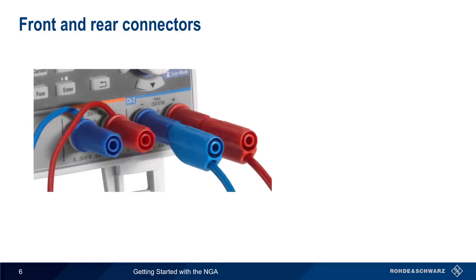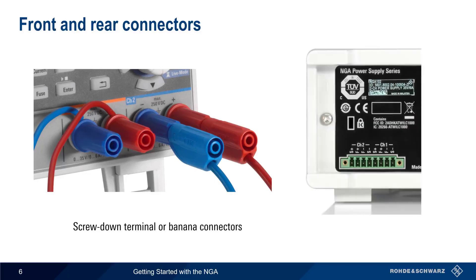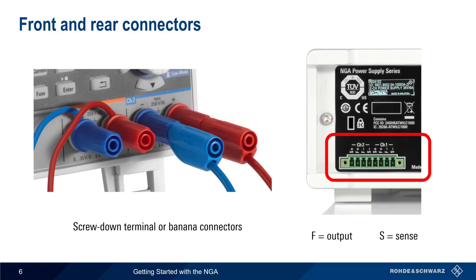On the front of the NGA, connections can be made using either screw-down type insulated terminals or pluggable banana-style connectors. Connections can also be made on the rear of the instrument at the provided terminal block, with the F terminals being for output connections and the S terminals for so-called sense connections, something we'll cover later in this presentation.